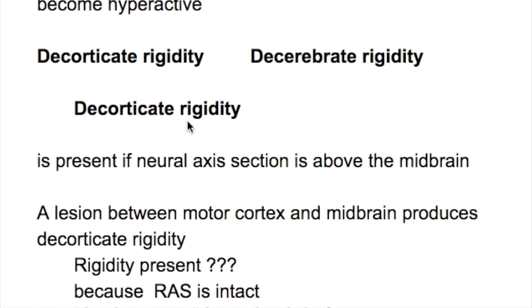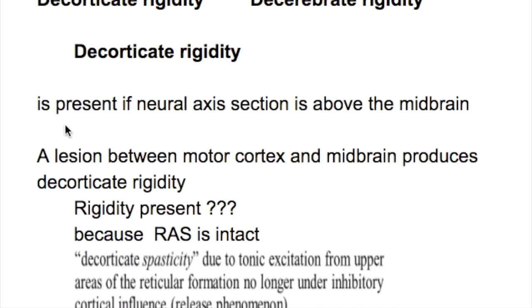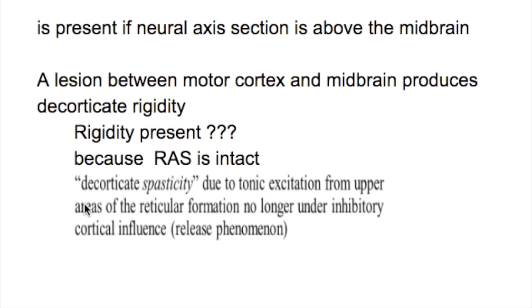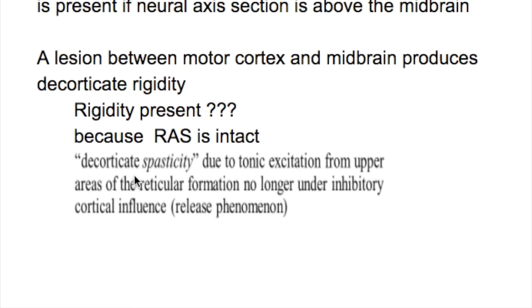What happens in decorticate rigidity? Decorticate rigidity is present if the neural axis section is above the midbrain. A lesion between motor cortex and midbrain produces decorticate rigidity. Rigidity is present because the reticular activating system is intact. Decorticate spasticity is due to tonic excitation from upper areas of the reticular formation, which is no longer under inhibitory cortical control.